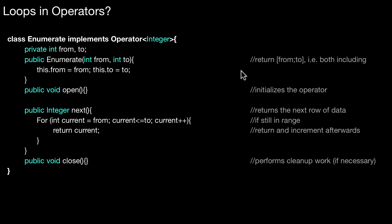Let's look at a more complex example. Here I want to return numbers in a specific range - numbers from 'from' to 'to'. This is a closed interval that I want to return by calling next on this operator. I keep those boundaries of the interval by assigning them to the internal variables from and to. Open and close don't do anything. But what happens in next?